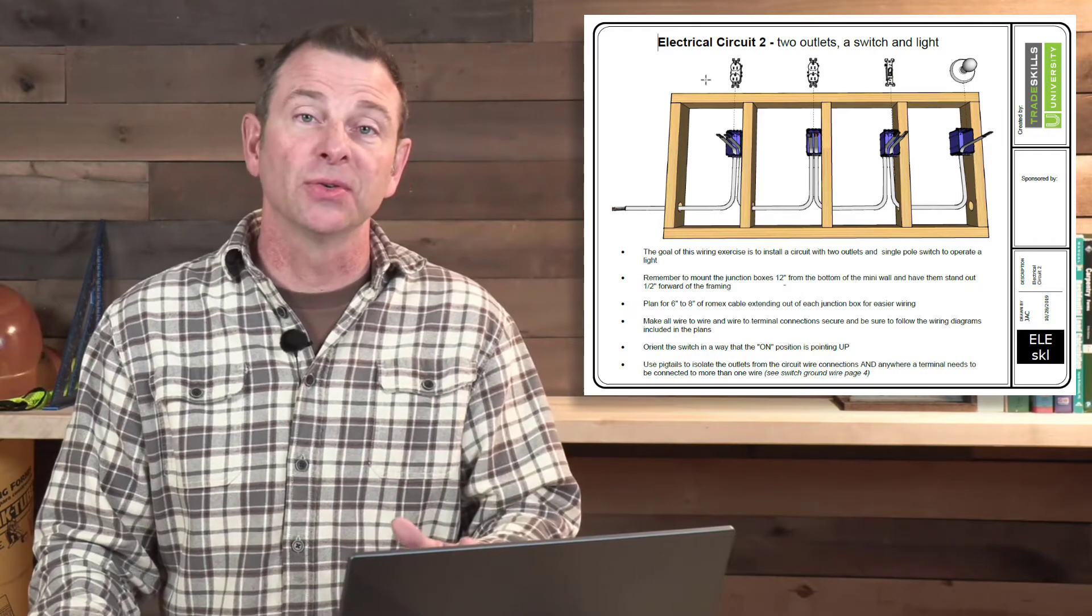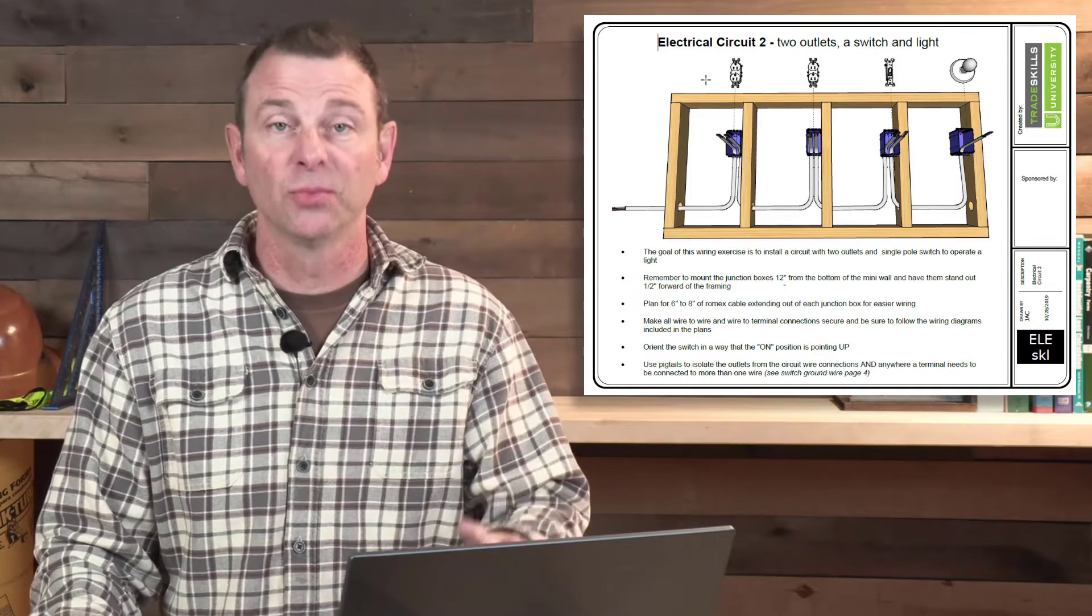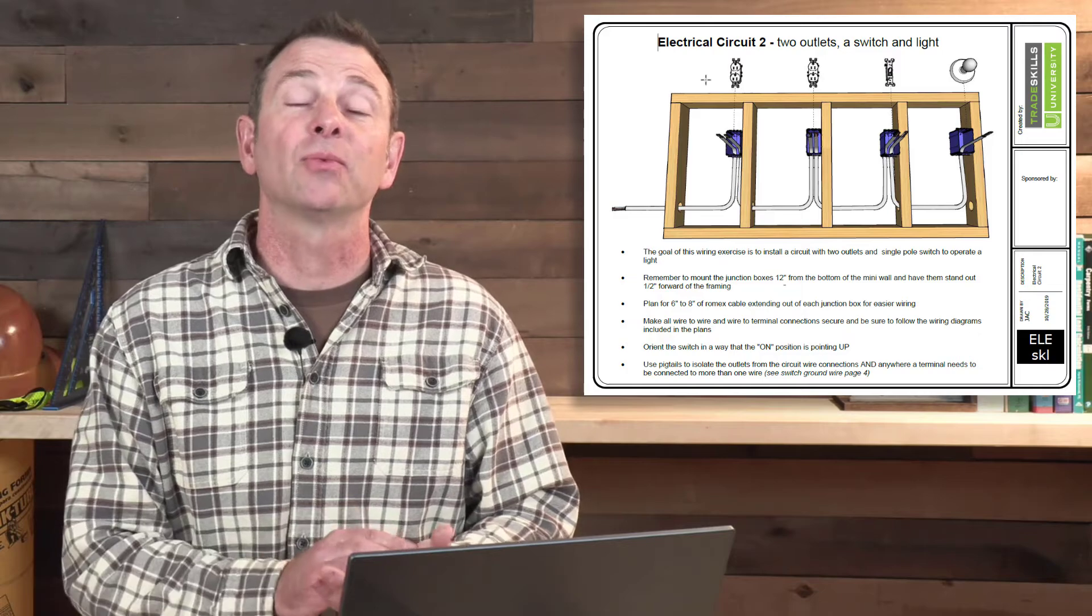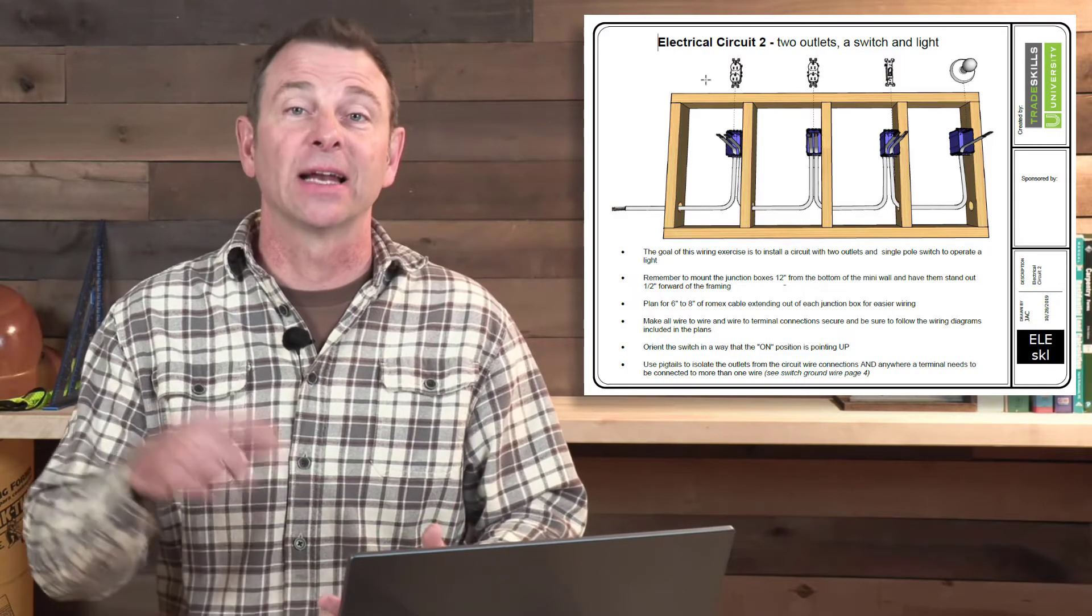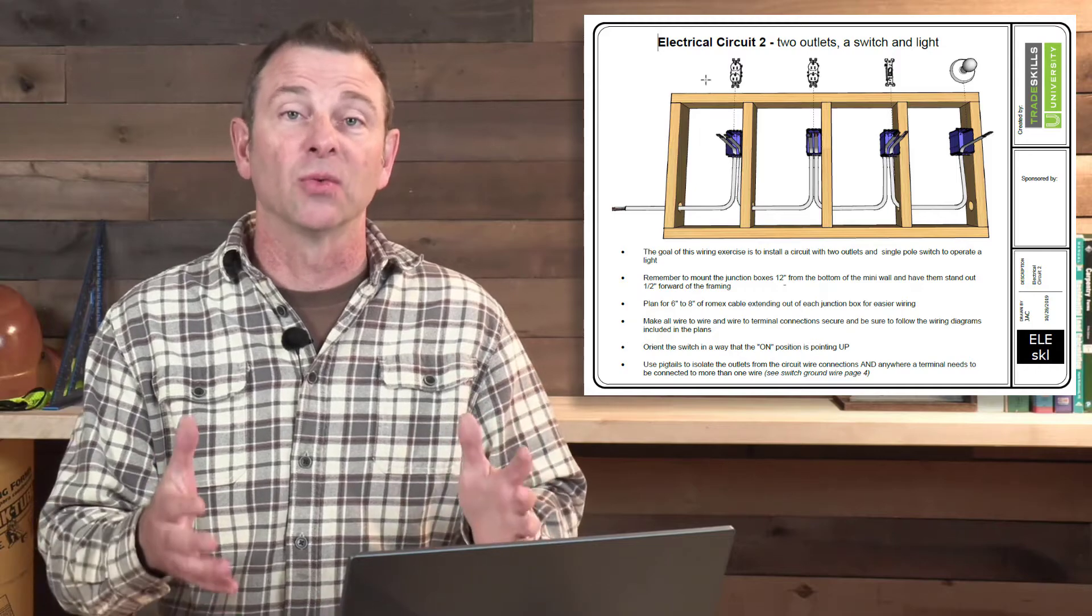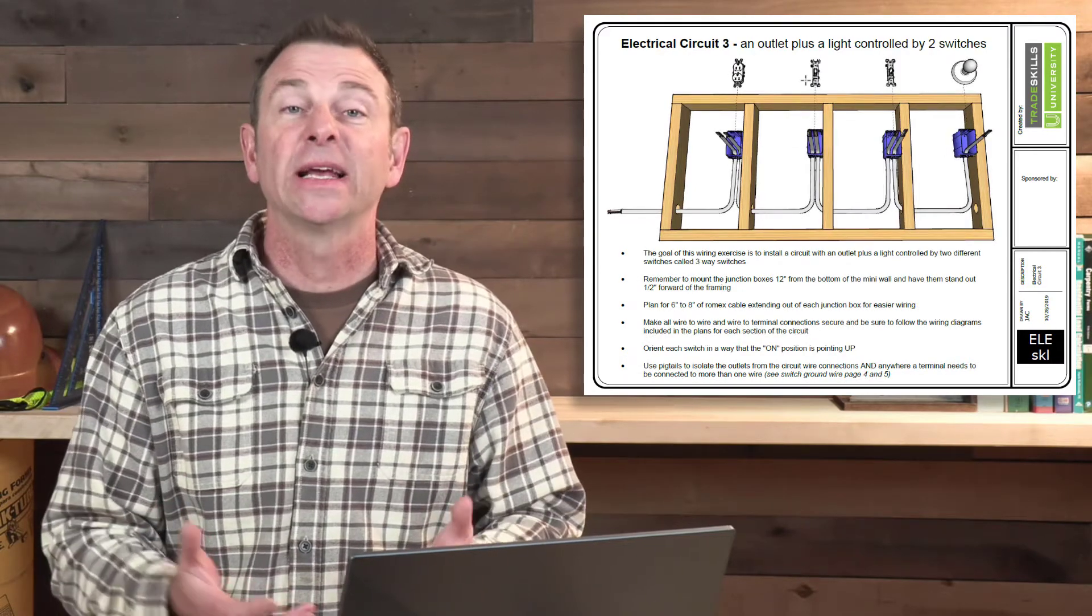The plan set for circuit number two has the students install two more junction boxes. Now they're running two duplex outlets, a single pole switch that operates a light fixture on one circuit.